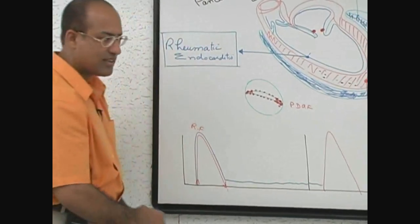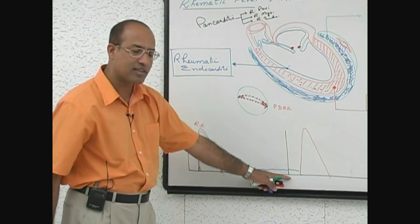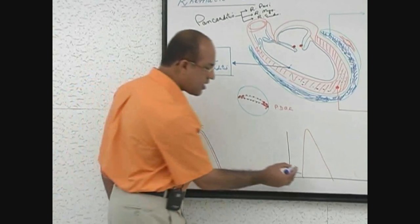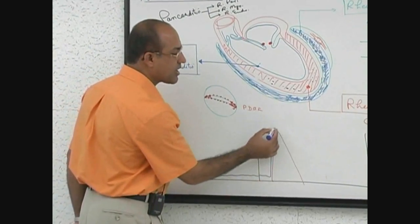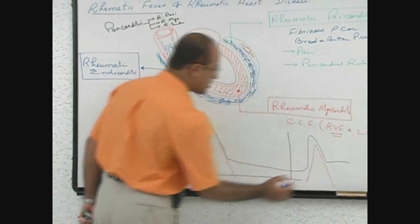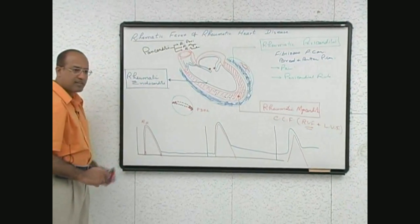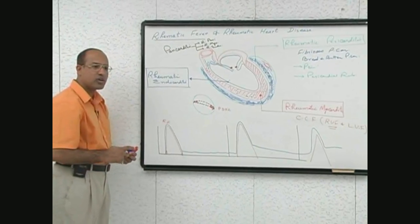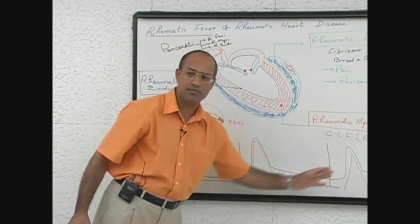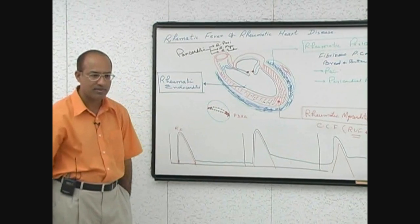The next time, when streptococcal infection occurs again and rheumatic fever occurs again, further damage to the valve will occur and the valves become more distorted each time. So during every rheumatic fever attack, this person is developing endocardial lesions and valvular lesions, and these lesions are getting cumulative - they are getting cumulative pathological distortions of the valve.